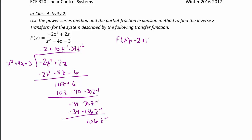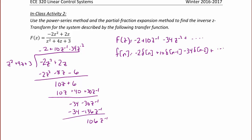When I subtract I get 106Z to the negative 1. So F of Z would be equal to negative 2 plus 10Z to the negative 1 minus 34Z to the negative 2, and so on. Therefore F of n is equal to negative 2 delta of n plus 10 delta of n minus 1 minus 34 delta of n minus 2 plus dot dot dot. So F of 0 is equal to negative 2, F of 1 is equal to 10, and F of 2 is equal to negative 34.